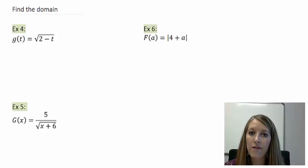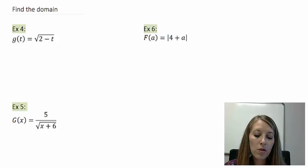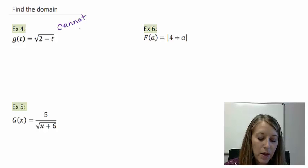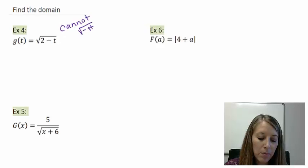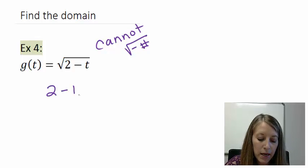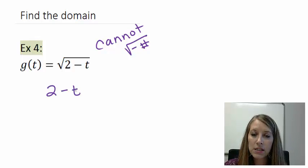In example four, we have a square root. Now we know that the square root has to end up to be positive on the inside, because we cannot have square root of a negative number. So that means the inside of my square root, specifically in this problem, 2 minus t, has to be positive.